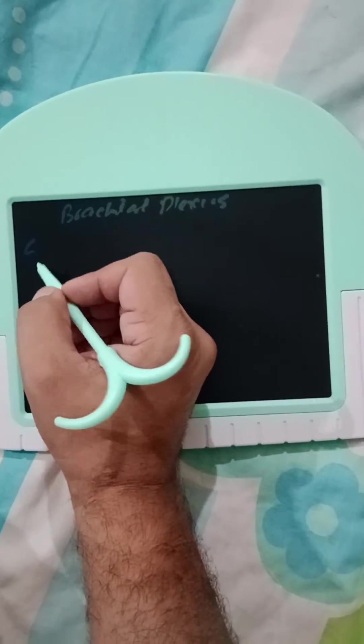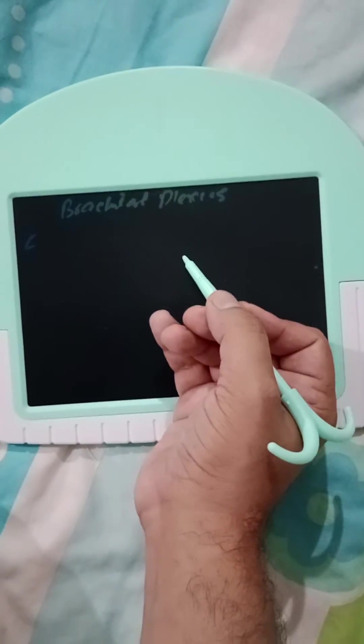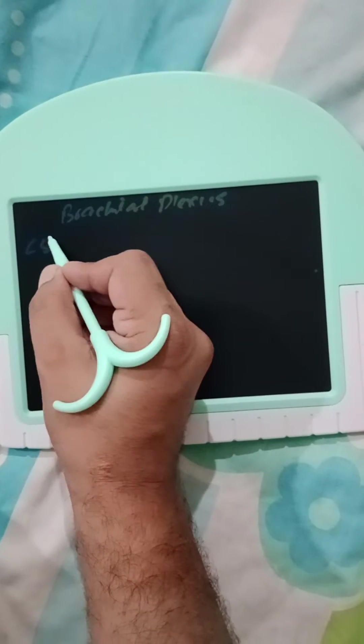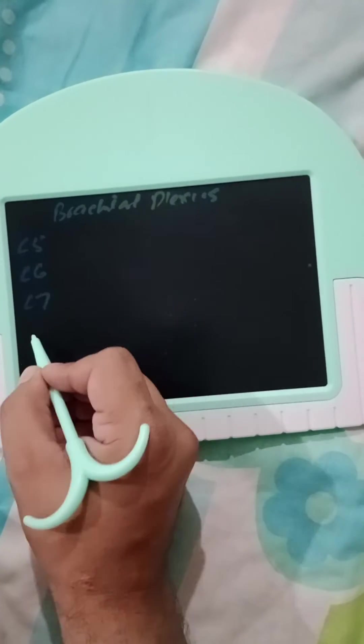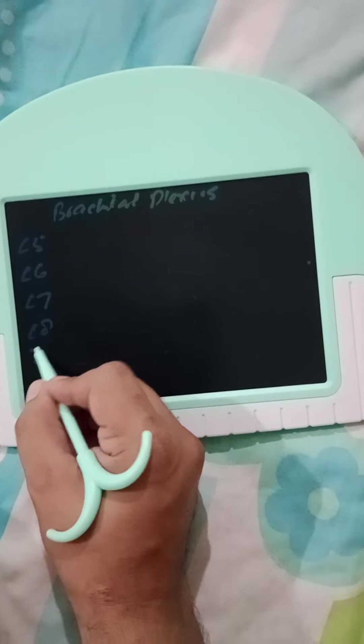First we have to know the roots from where the brachial plexus starts: C5, C6, C7, C8, T1.